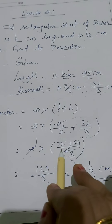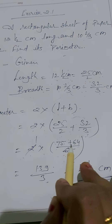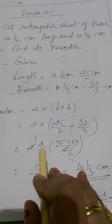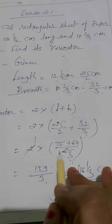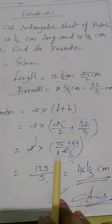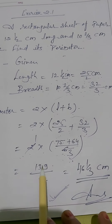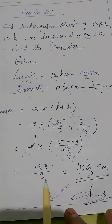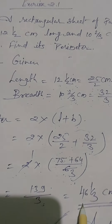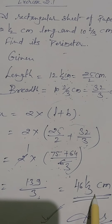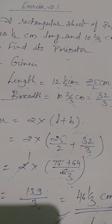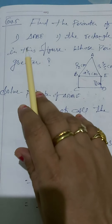We have 75 + 64 = 139, divided by 6, then multiplied by 2. The 2 cancels with the 6 to give 139/3. In mixed fraction form, the answer is 46 and 1/3 centimeters.